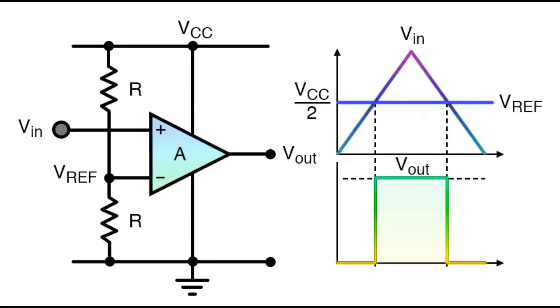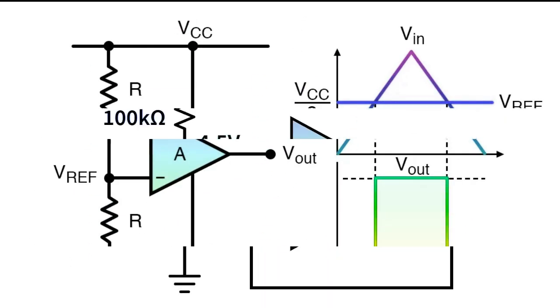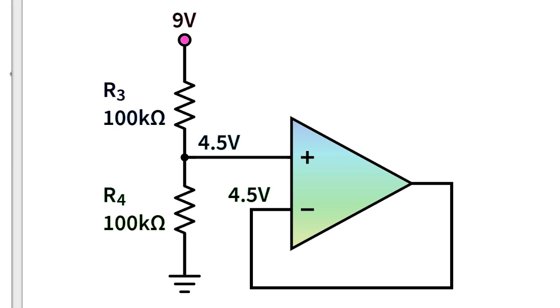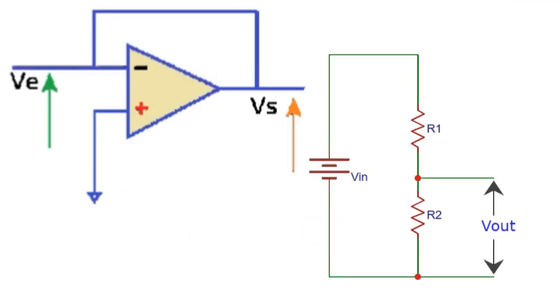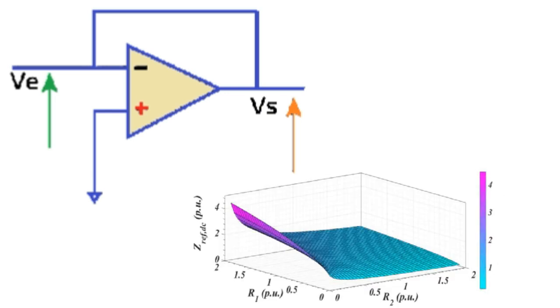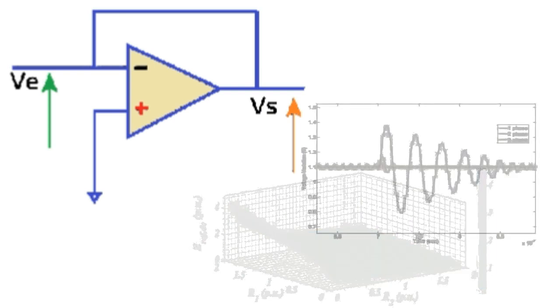This circuit is based on a voltage divider and the circuit cannot work. In fact, the load impedance can have variations, so the voltage V out can change dramatically, especially if the load impedance has a value equal to R2.